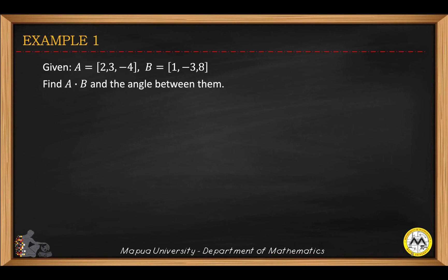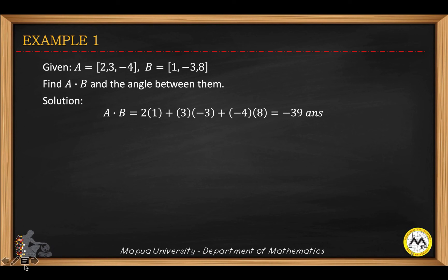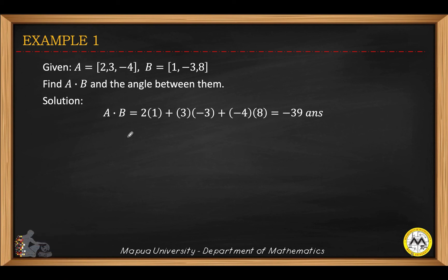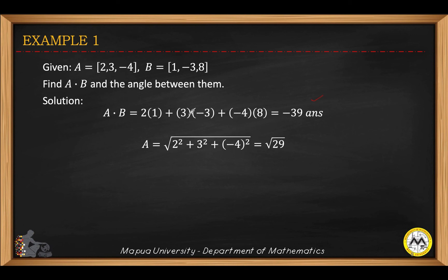As an example, given two vectors A and B, we find the angle between them. We first compute the dot product using the second formula — the sum of products of respective components: 2 times 1, plus 3 times negative 3, minus 4 times 8 — which gives negative 39. Then we compute the magnitude of vector A, which is the square root of the sum of squares of its components.